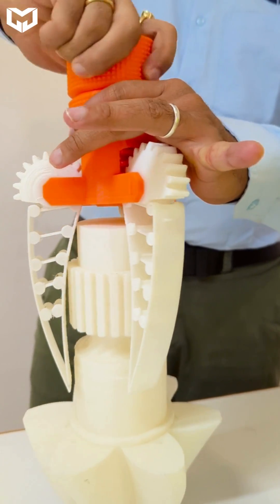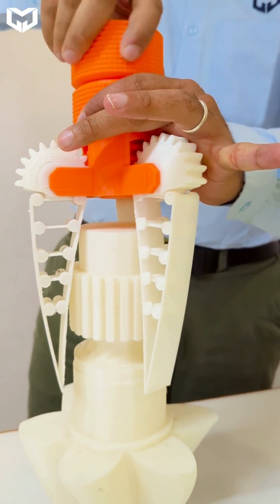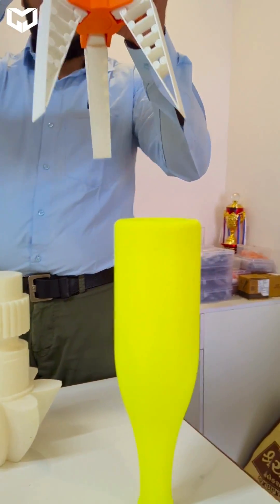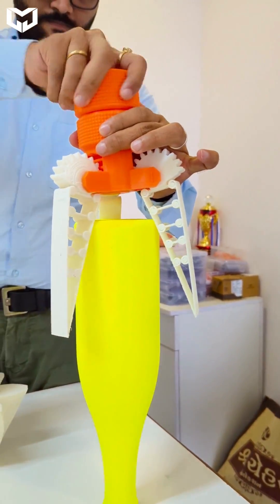Additionally, we have another compelling example showcasing the gripper's ability to securely grasp complex shaped objects such as bottles.